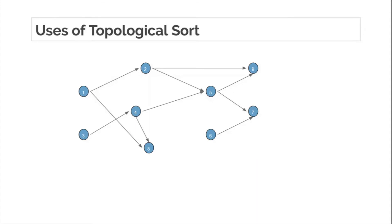Instead of just listing where topological sort is used, I'll take a real example. There are many places where topological sort is used — my favorite is in Gradle dependency resolution. If you have worked with Android Studio you already know about Gradle and dependencies. You can also use topological sorting in operating systems to find deadlocks. You can use Kahn's algorithm to determine if a valid topological ordering exists; if not, that means there is a cycle, and a cycle among OS processes means there is a deadlock.